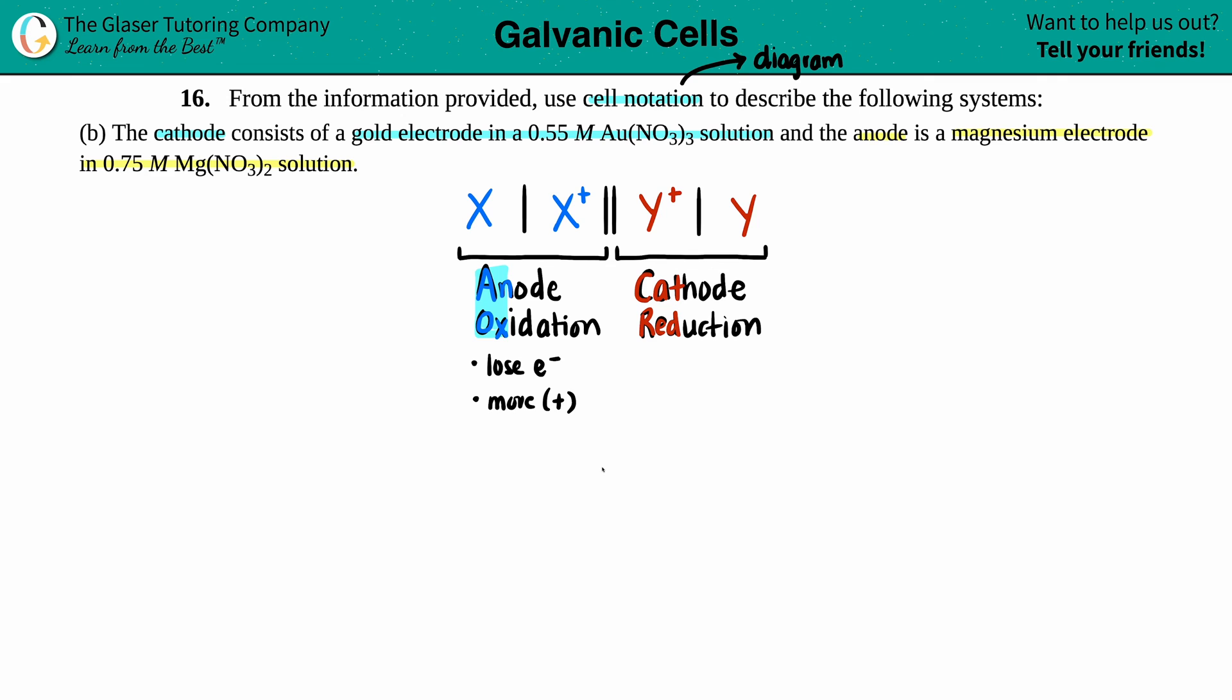If you're losing electrons, if you're losing negative values, you're going to become more positive. They did say that here was the anode, that we have a magnesium electrode. If it's an electrode, it's acting in a state that is not the solution. At standard state conditions, magnesium is a metal, so it has to be a solid. All metals except for mercury are always going to be a solid at standard state.